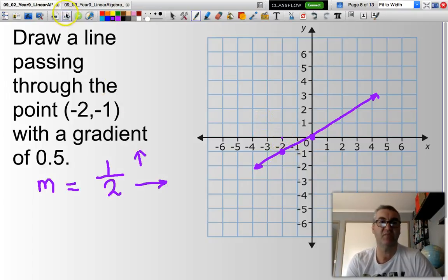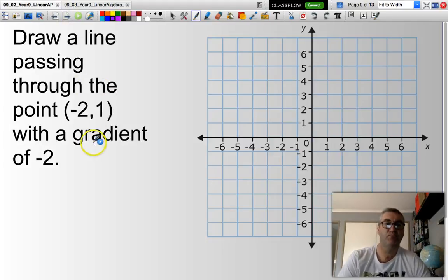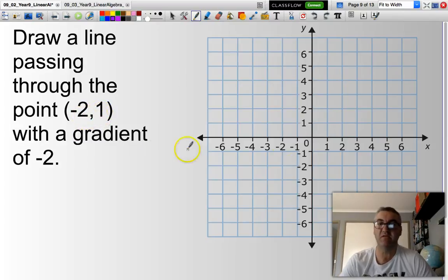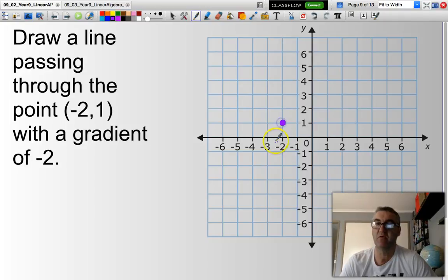Okay, let's move to the next example. We're going to go through the point negative 2, 1. So x is negative 2. This time, y equals 1. So that is my starting point. Now, I have a gradient of negative 2. So my value of m, my gradient, will be equal to negative 2 over 1.